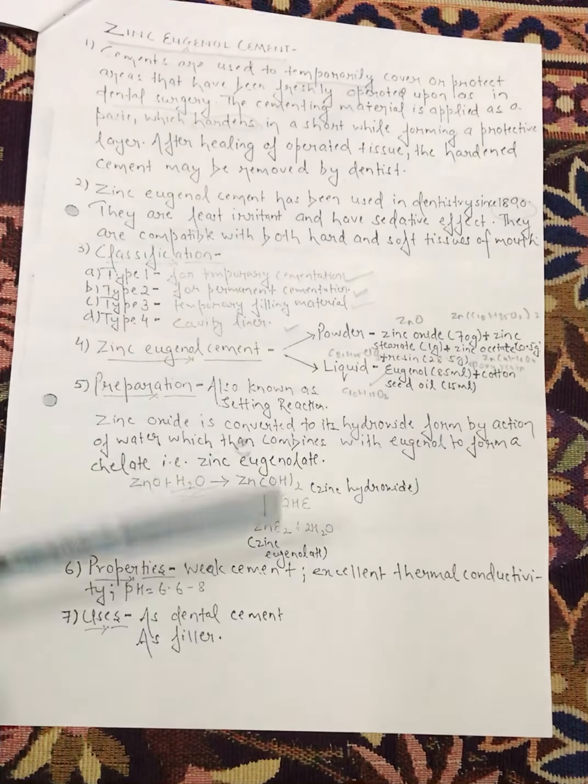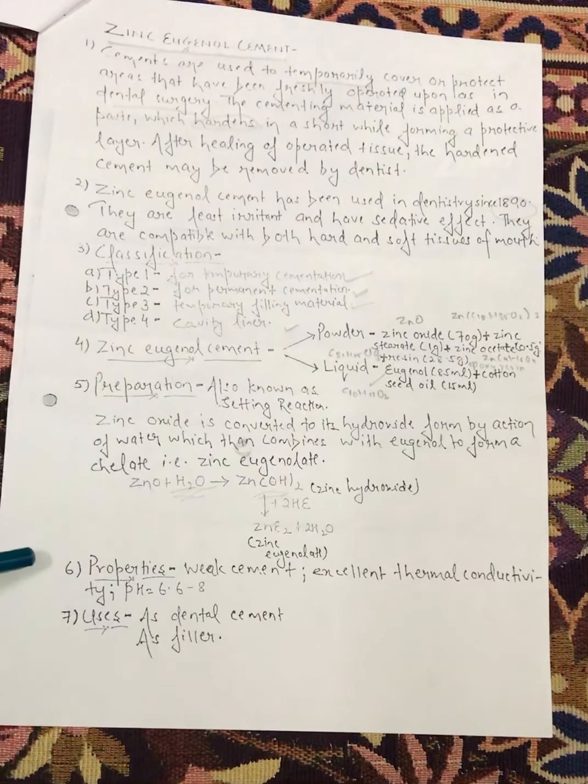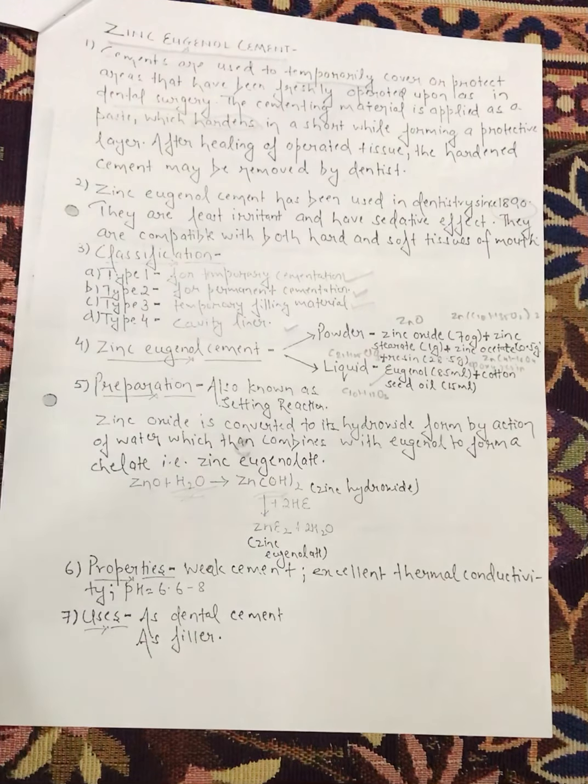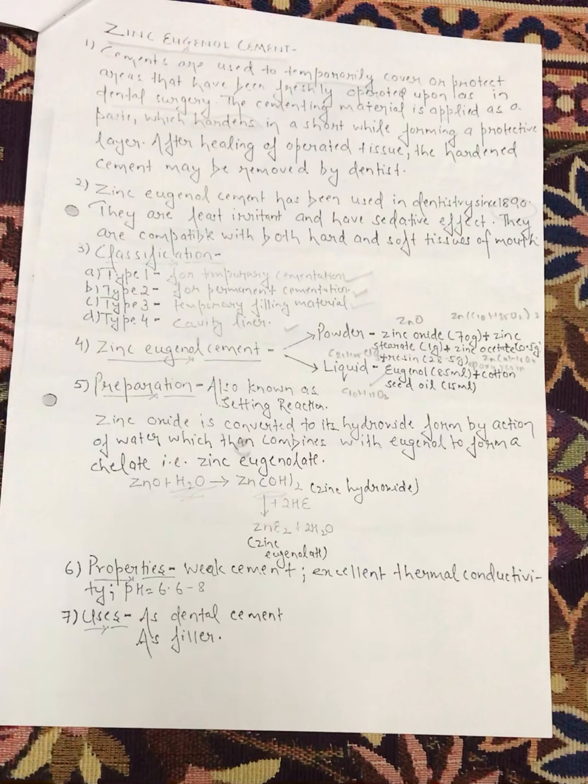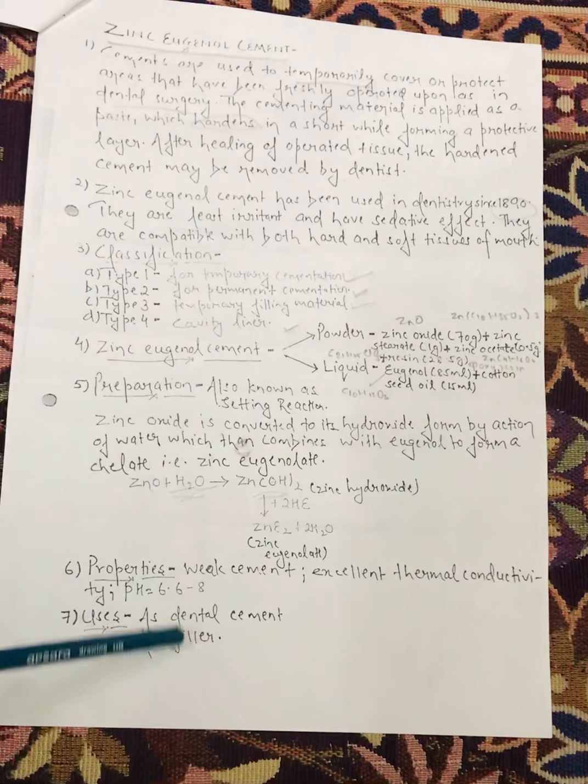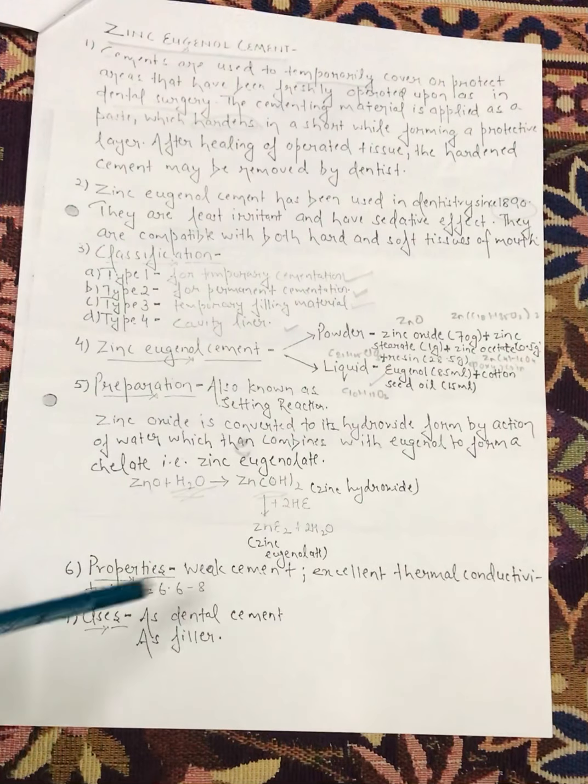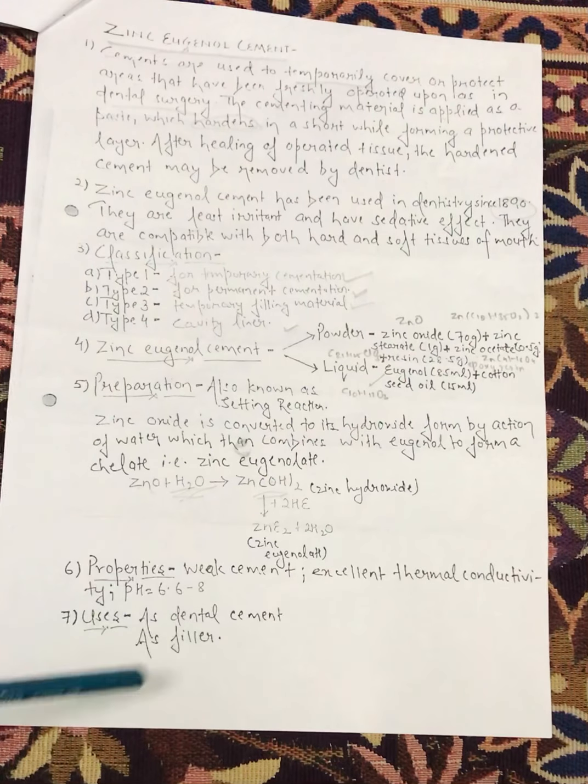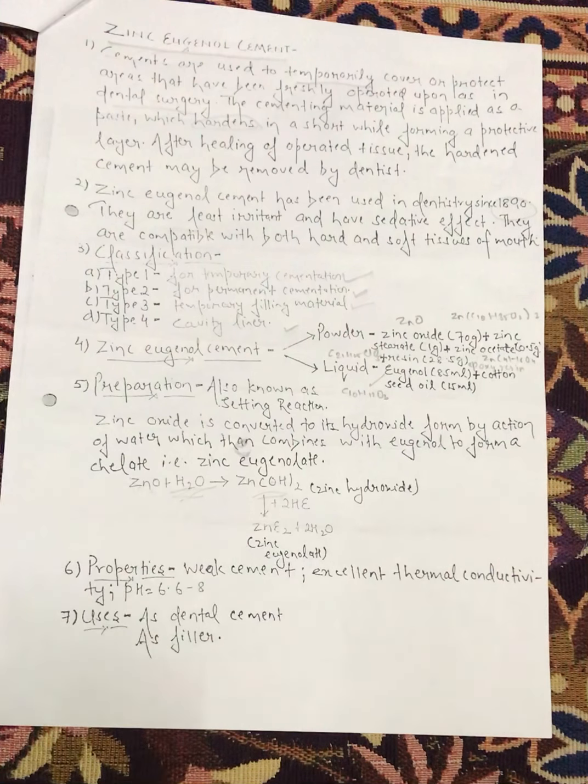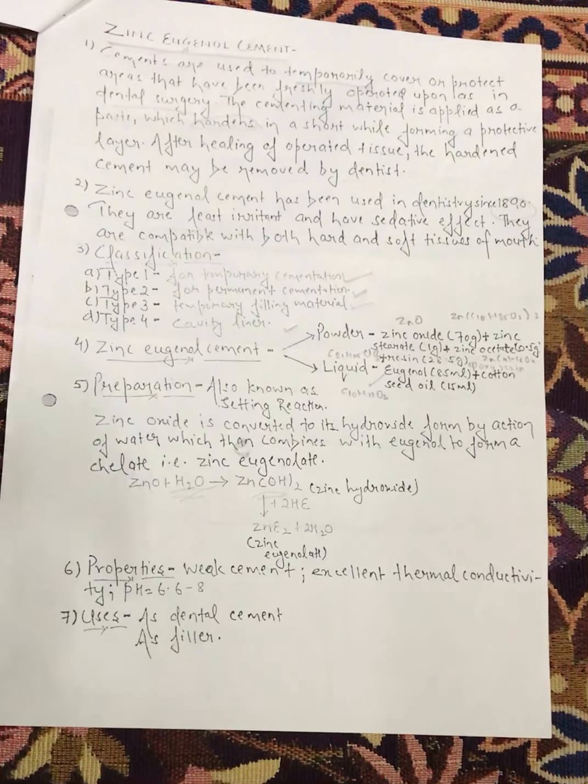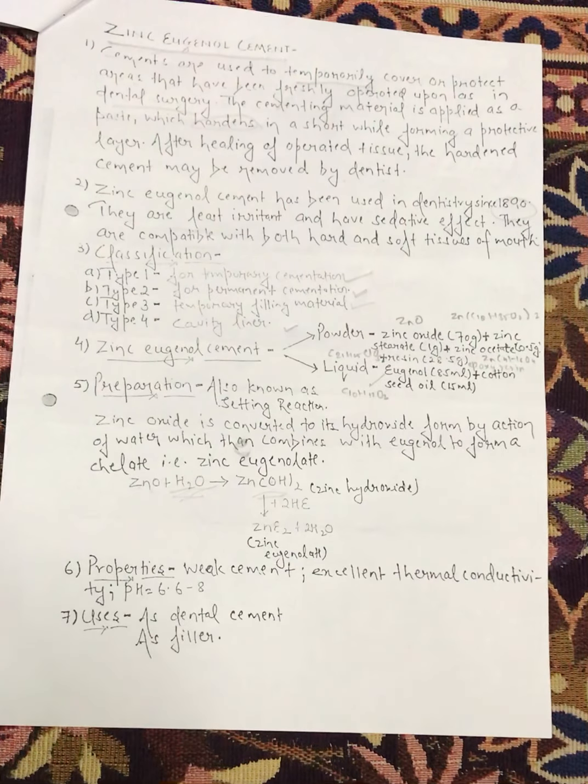Properties: it is a weak cement with excellent thermal conductivity, means it will withstand any temperature. We will maintain the pH range within 6.6 to 8. And uses: it is used as a dental cement and it is also used as a filler. These are the preparation, properties and uses of zinc eugenol cement.